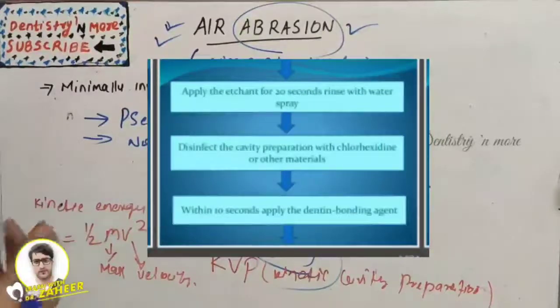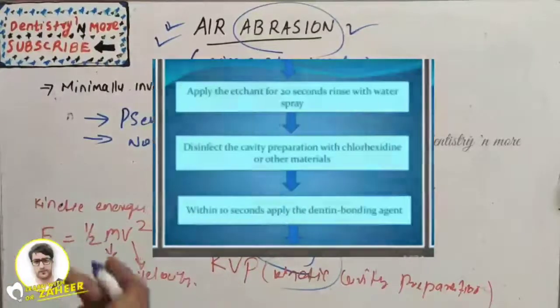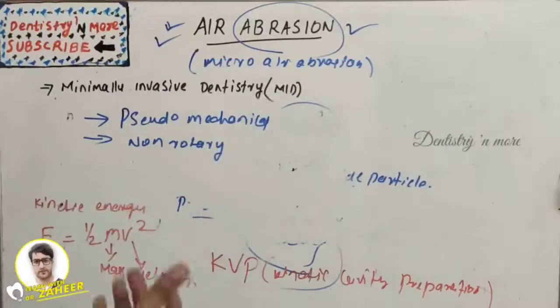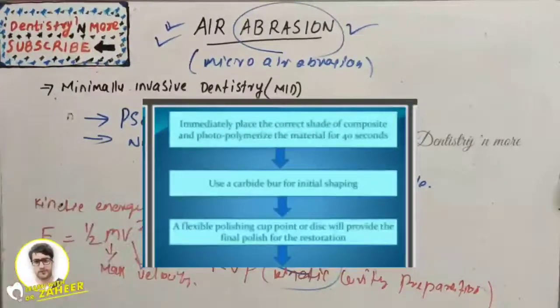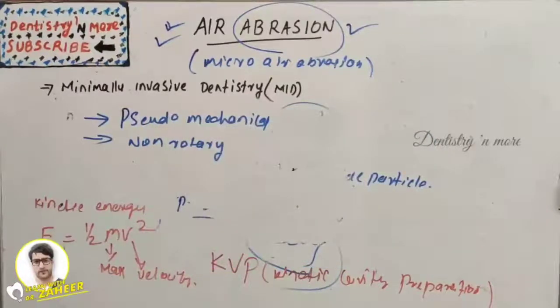Reapply the caries detecting dye, complete the preparation until all caries is removed. Apply etchant for 20 seconds with water spray, disinfect the cavity preparation with chlorhexidine within 10 seconds, apply the dentin bonding agent, place the composite and polymerize it. Then we can use any bur for initial shaping and the final finishing protocols.